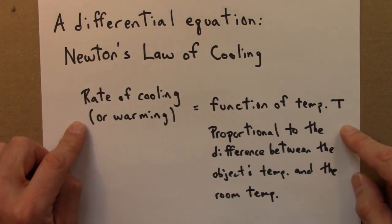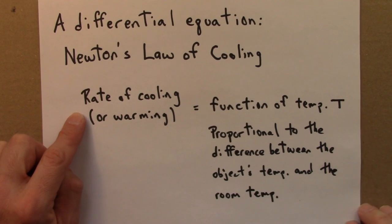And in particular, that function is proportional to the difference between the object's temperature and the room temperature. So if the object is a lot hotter or a lot colder than the room temperature, its temperature will change very quickly.